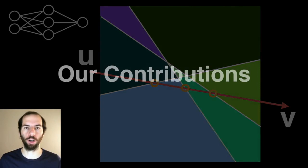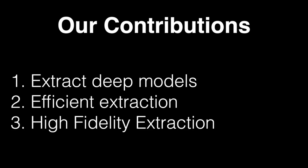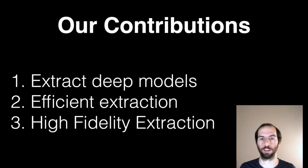So the main contributions of our paper are three different things. First, we show how to extract deep neural networks — those prior papers worked only for one hidden layer; we extend this to arbitrary depth. Second, we show how to do this efficiently — one other paper that came out around the same time was able to extract deep neural networks, and we are roughly a thousand times more query efficient than that paper. Third, we do what's called high fidelity extraction — we can extract neural networks that are basically up to floating point precision identical to the original model.